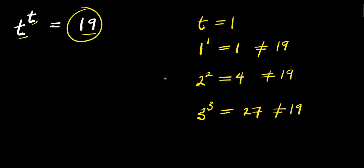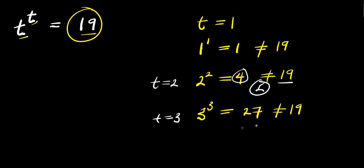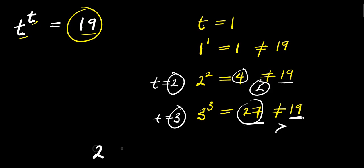But we can get some range of values of t, because when t is 2 we are having 4 and this is actually less than 19, and when t is 3 we are having 27 and this 27 is greater than 19. So the range of values of t is between t equals 2 and t equals 3 — that is, 2 is less than t while t is less than 3.